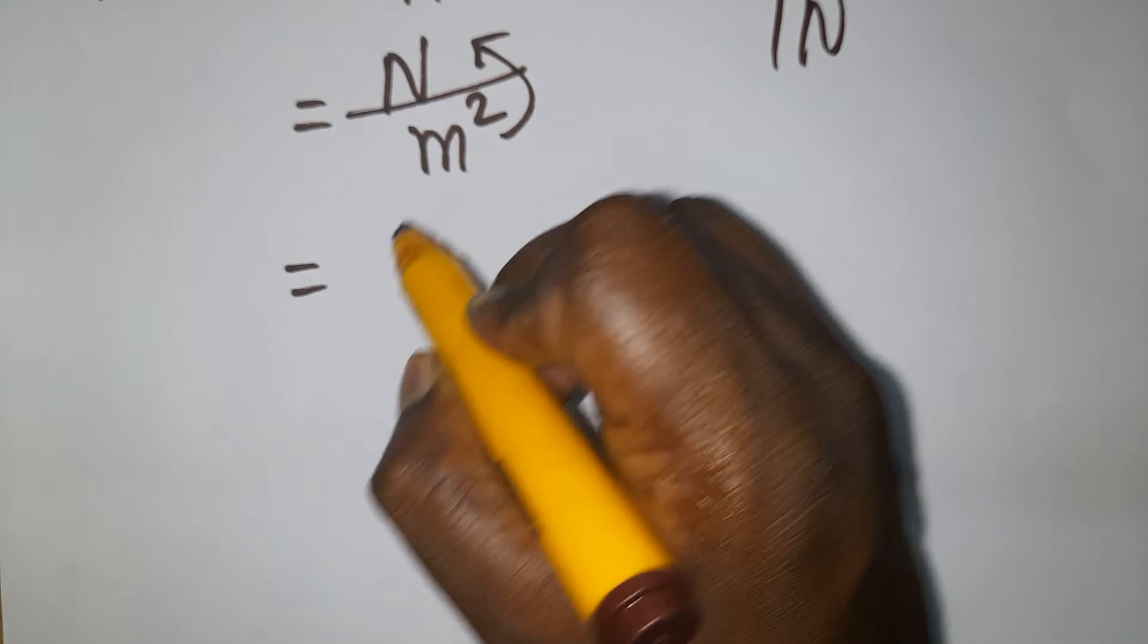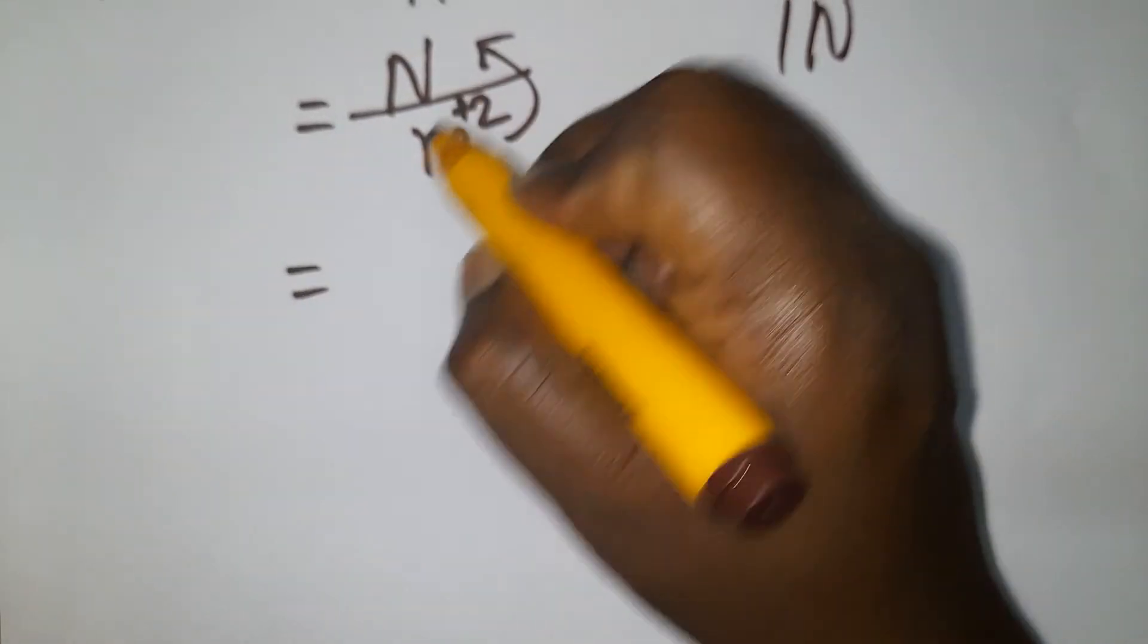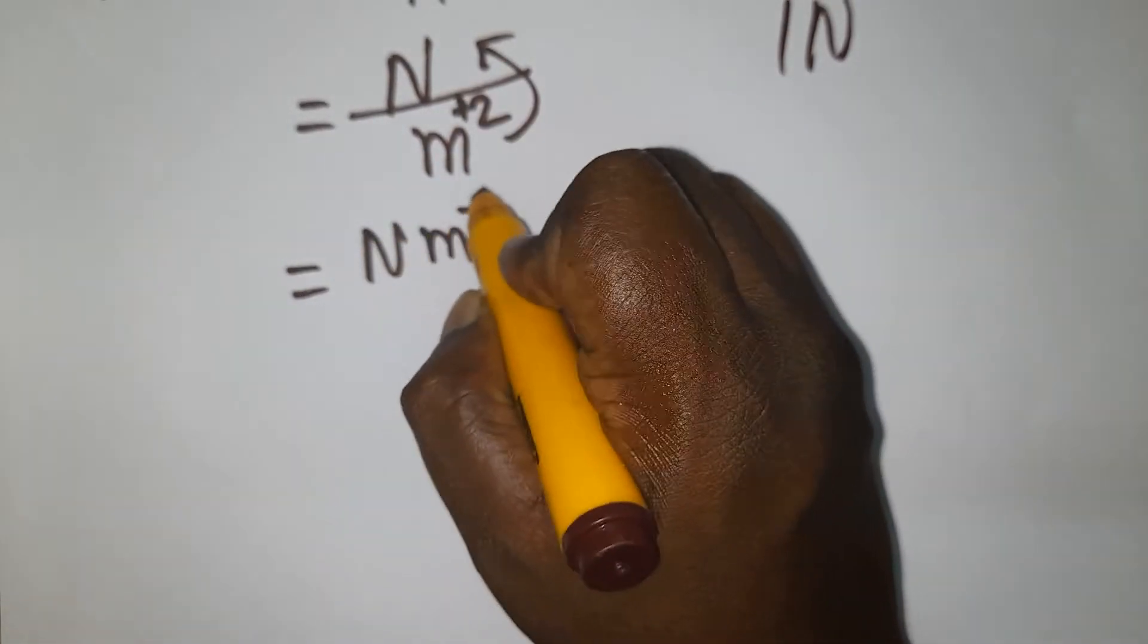From denominator to numerator, if I take meter square to the numerator, plus 2 becomes minus 2. Newton meter minus 2.